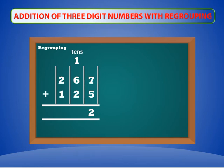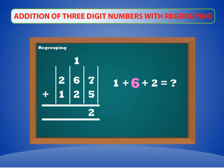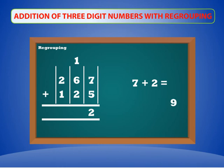Now let's add the tens column. 1 plus 6 plus 2. 1 plus 6 is equal to 7, and 7 plus 2 is equal to 9. Place 9 in the tens column.